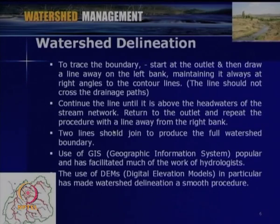Two lines should join to produce the full watershed boundary — starting in one direction, we come back to the end, giving the delineated watershed. This is the general manual procedure for watershed delineation. Nowadays, very sophisticated GIS software is available like ArcInfo, ArcGIS, or GRAM++ etc. The use of GIS is now very popular and has facilitated much of the work of hydrology.